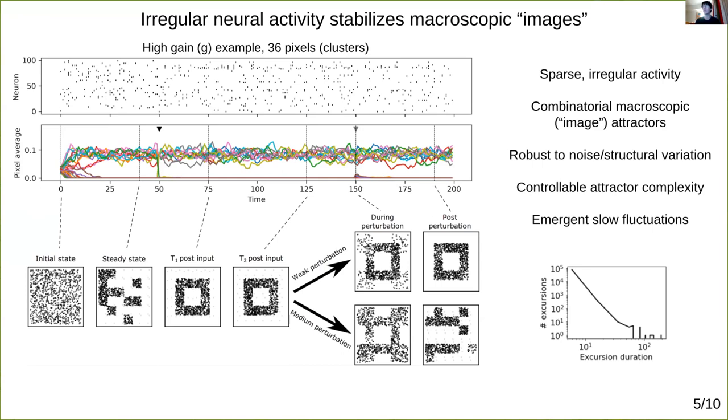Finally, while the network has no built-in time scales except an implicit tau equals one, you see occasional slow excursions of pixel intensities from their means, which simulations suggest may have heavy tail durations.